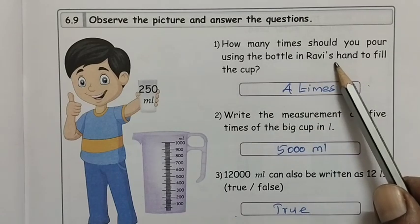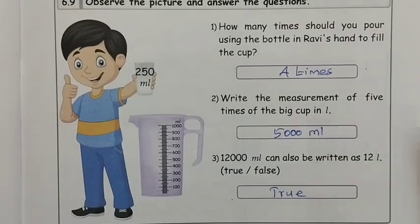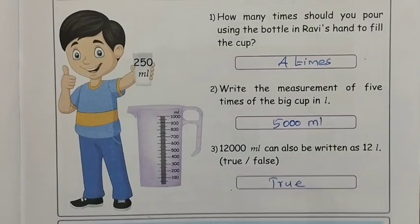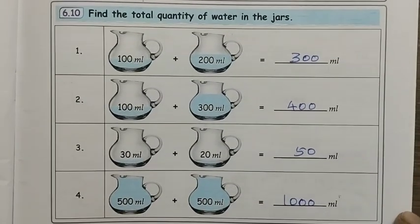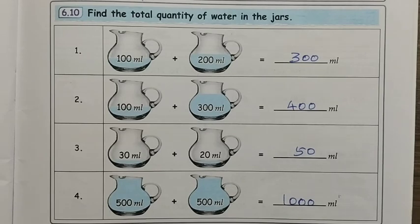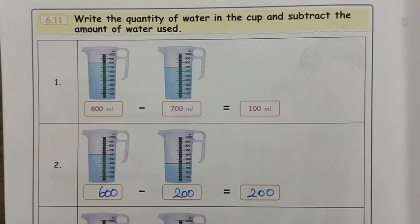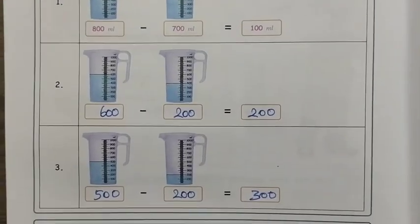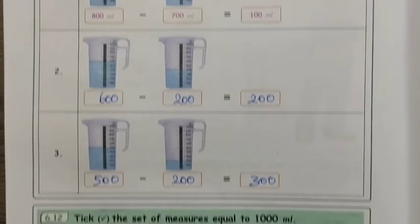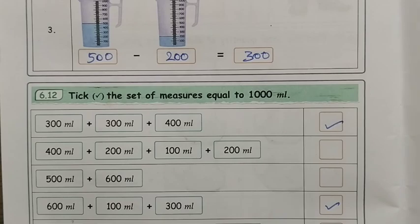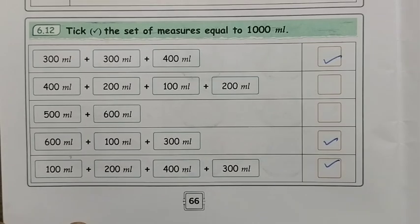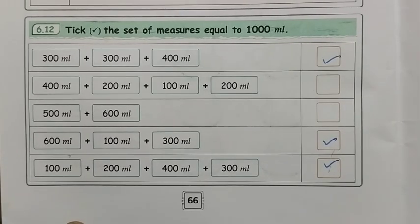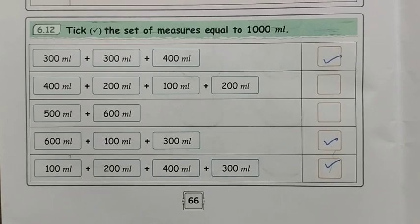Had to fill the cup four times. This one is 5000 ml, this one is true. Find the total - you just add, very simple addition for students. Normal simple subtraction. Take the set of measures equal to 1000. First one and then the last two - these are the things that will come.